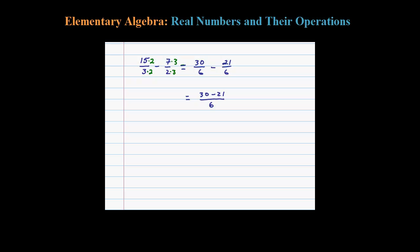over your one common denominator. So 30 minus 21 is 9. 9 over 6. Now what happens here, this